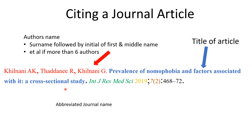The third component, shown in green, is the abbreviated journal name — that is, the name of the journal in which the article is published. In this example, the journal is the International Journal of Research in Medical Sciences, but the abbreviated journal name is used. This abbreviated name is mentioned mostly on the journal's website, or if the journal is indexed in an agency like PubMed, you can find it in their catalog.